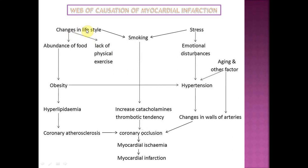Take the example of myocardial infarction. Basic factors are changes in lifestyle, smoking, and stress. Stress causes emotional disturbance, which releases hypertension, causing arterial wall changes and coronary occlusion. At the same time, aging also causes hypertension. Changes in lifestyle and food habits lead to obesity, which also results in hypertension, and obesity also results in hyperlipidemia, leading to atherosclerosis and also coronary occlusion. All these factors are interrelated — we cannot put them into a triangle shape; it is like a web of all interrelated factors causing disease.